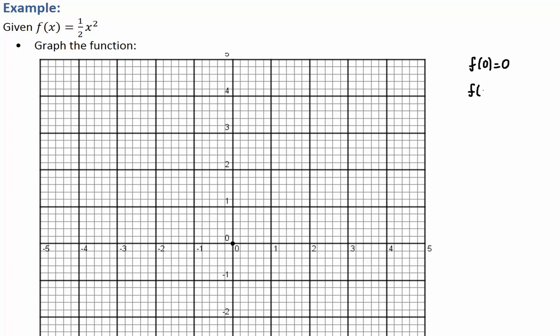Now f(1) would be equal to 1 half, because you plug it in, you get 1 half times 1 squared is 1 half. If you plug in negative 1, you're going to get the same thing because when you square it, you get positive 1 and then times a half. So this function is symmetric with respect to the y axis, so we just have to plot one half and the other one is automatic.